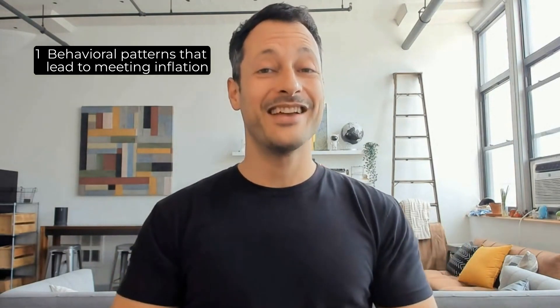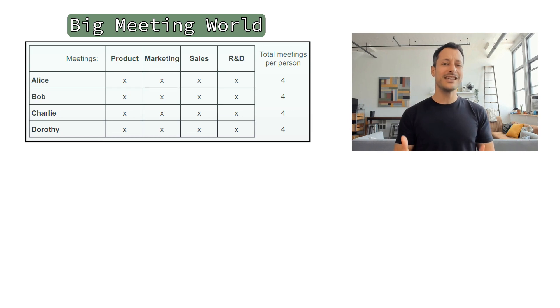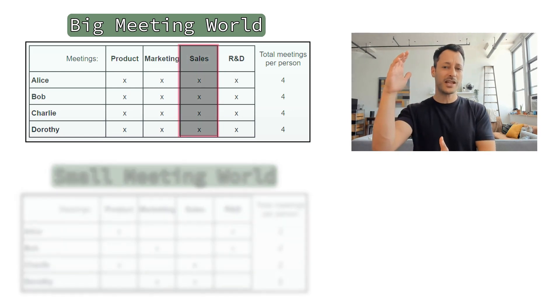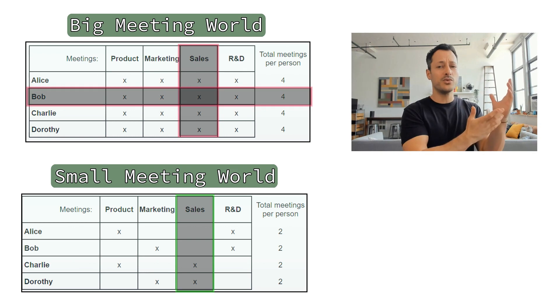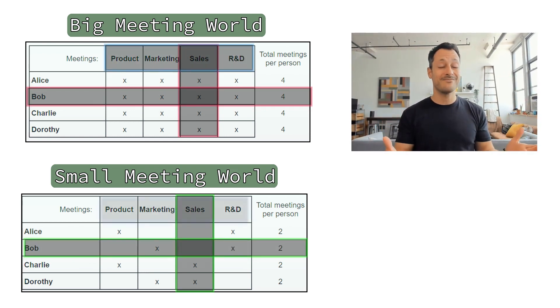TLDR: at some point I realized my team's problem wasn't that there were too many meetings per se — it was that there were too many participants in those meetings. After all, if we take each meeting and just make it smaller, each team member would have fewer meetings to attend, despite the overall number of meetings staying the same. Now, I can direct my team to have smaller meetings, but if I want a better chance at success, I should try to understand the underlying dynamics that lead to large meetings.